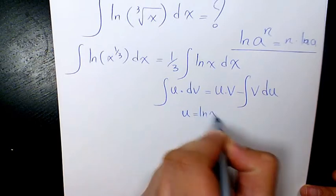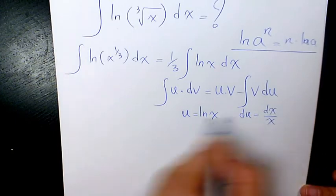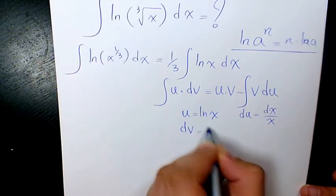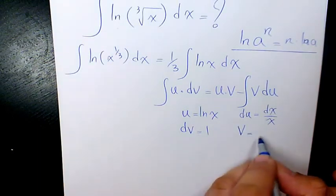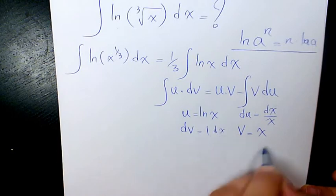I'm going to consider u as ln x, so du will be dx over x. The derivative of ln x is going to be dx over x. And dv is 1 dx, which means that v is x.